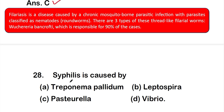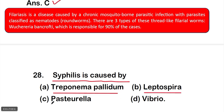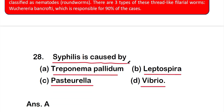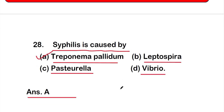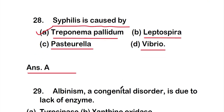Question number 28: Syphilis is caused by — Option A: Treponema pallidum, Option B: Leptospira, Option C: Pasteurella, or Option D: Vibrio. Syphilis, which is a sexually transmitted disease, is caused by Option A, Treponema pallidum.